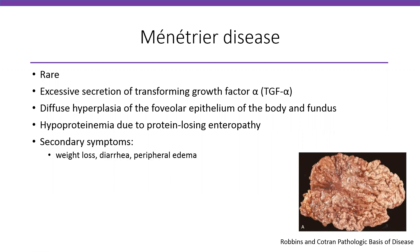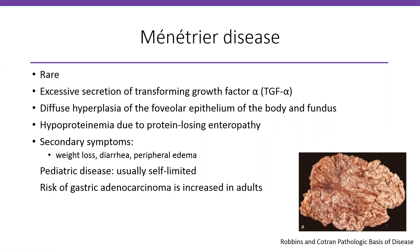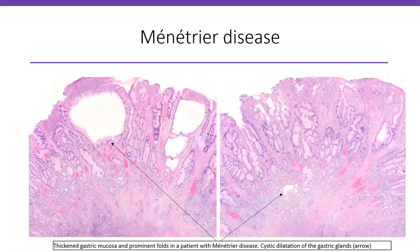You can also have secondary symptoms like weight loss, diarrhea, and peripheral edema. Usually in pediatrics it's a very self-limited disease. In adults, there is risk of adenocarcinoma. Histologically, we see thickened mucosal folds, a lot of hyperplasia of the gastric mucosa, and sometimes cystically dilated folds — so hypertrophic gastric folds and gastric glands.